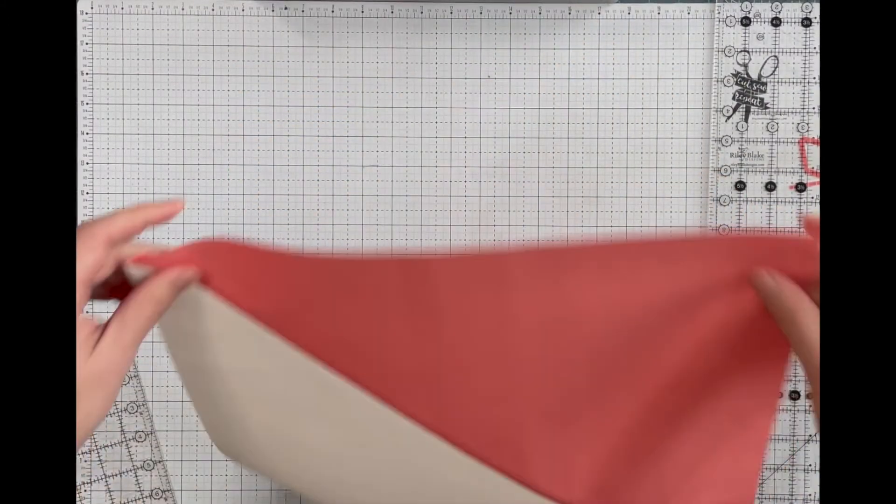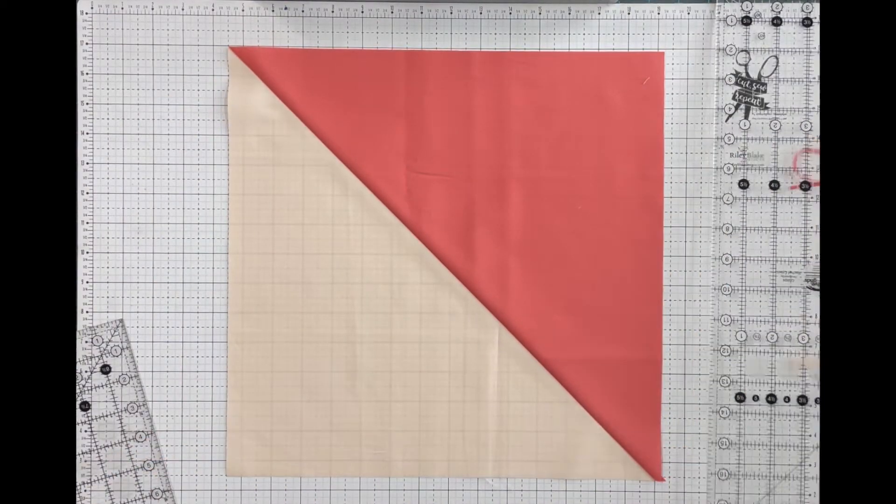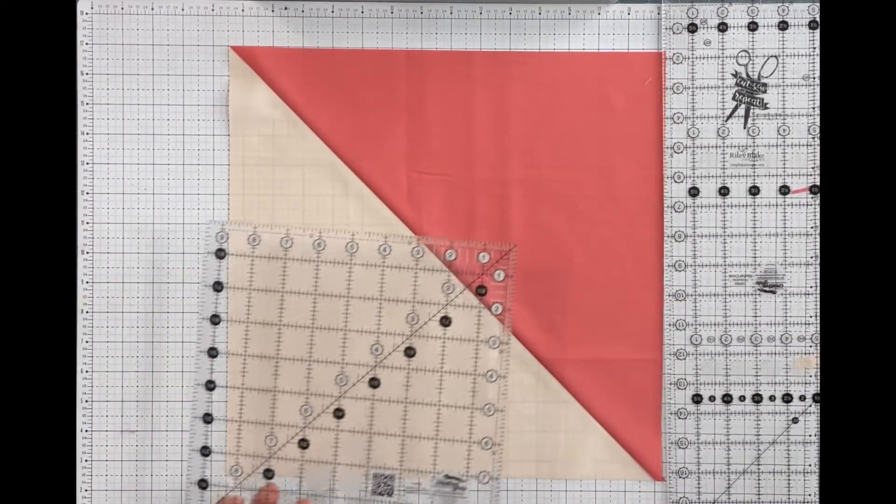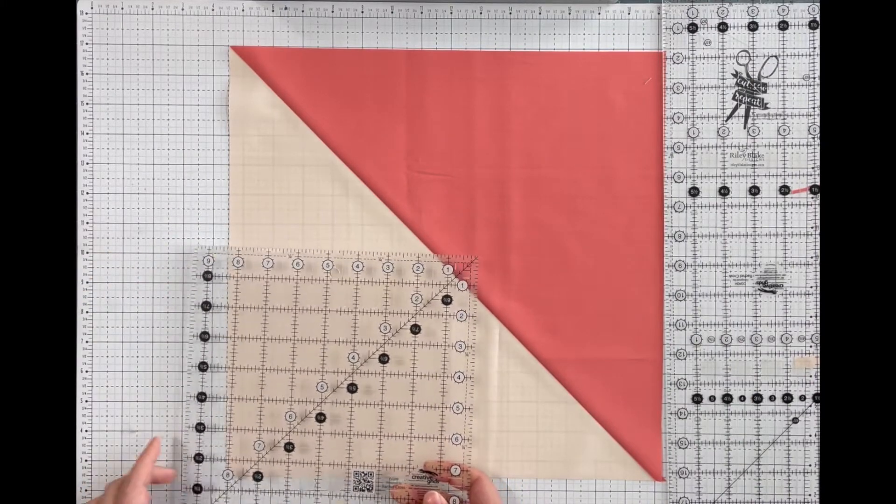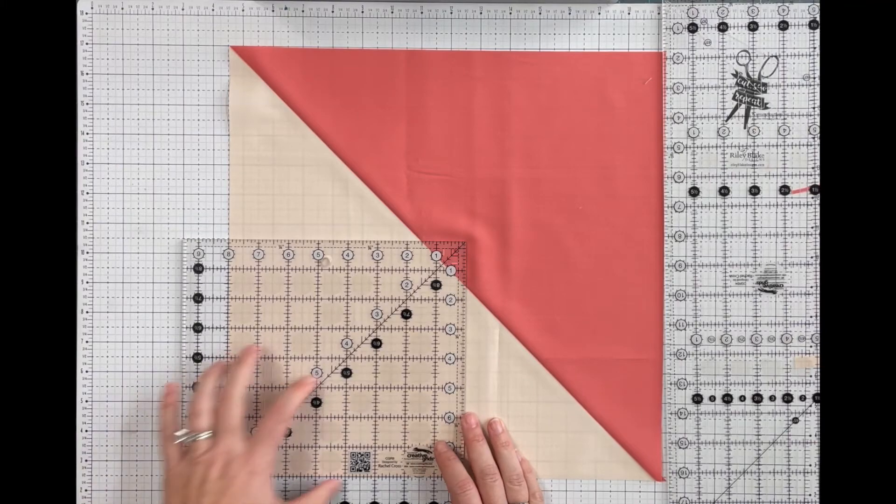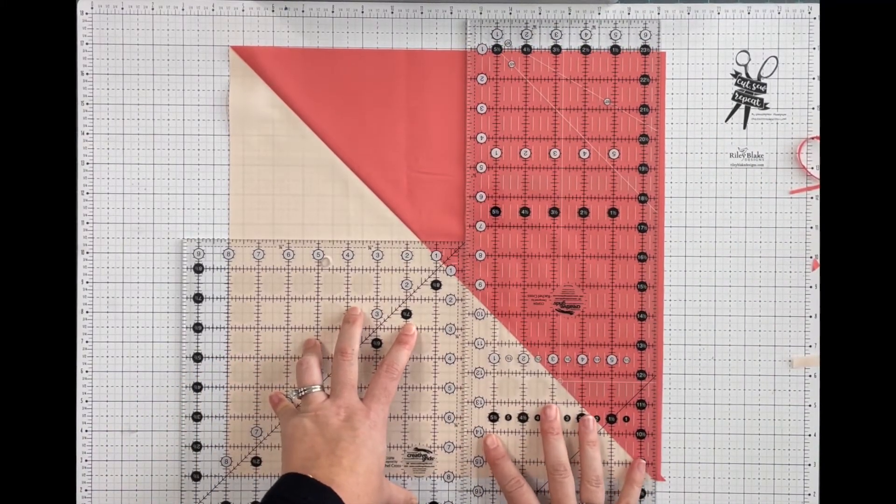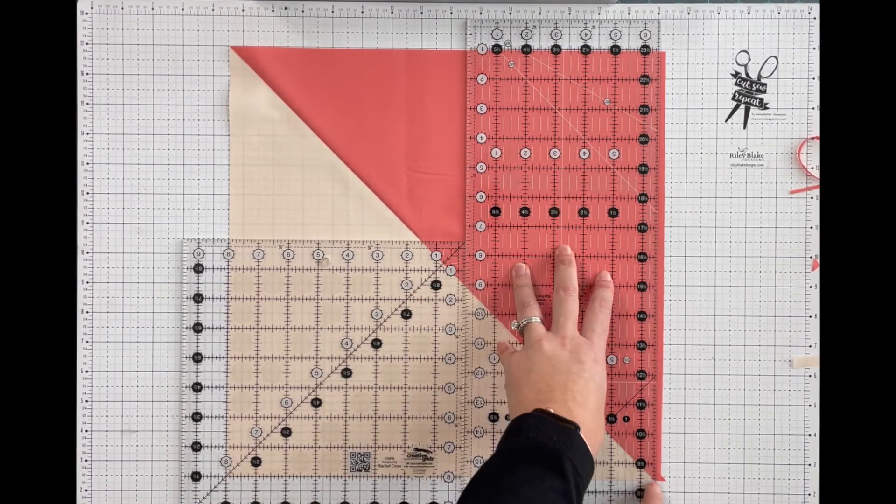Rotate the block to trim the last side. And this time I'm going to make sure the 8 inch is on the corner edge on both edges. And you see how the corner of the diagonal lines up perfectly with the edge I'm going to cut.